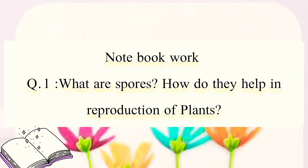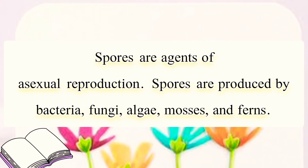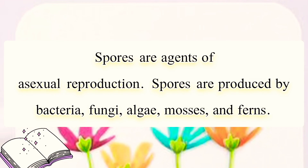Now students, be ready with your notebooks and start writing. What are spores? How do they help in the reproduction of plants? The answer is: spores are agents of asexual reproduction. Spores are produced by bacteria, fungi, algae, mosses, and ferns.